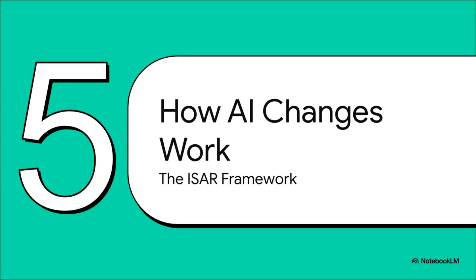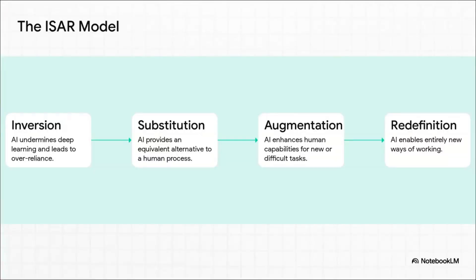So now we've got these two really powerful ideas on the table — the exoskeleton and the cybernetic teammate — plus this major risk of not actually learning anything. How do we make sense of it all? Luckily, researchers in educational psychology have developed a brilliant framework called the ISAR model. The ISAR model gives us four distinct ways to think about AI's impact.